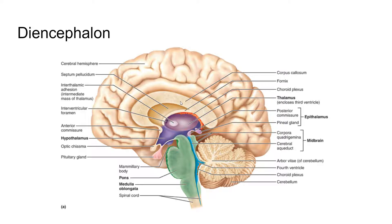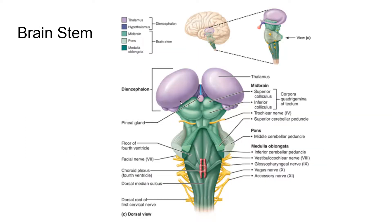The epithalamus we're not going to get into as much, so we'll leave that alone. Next, we're going to talk about the brainstem. The brainstem has three main areas: the midbrain, the pons, and the medulla oblongata. It has a very similar structure to the spinal cord, but it contains a lot of areas known as nuclei, which are concentrated areas of neurons embedded in the white matter of the brainstem.